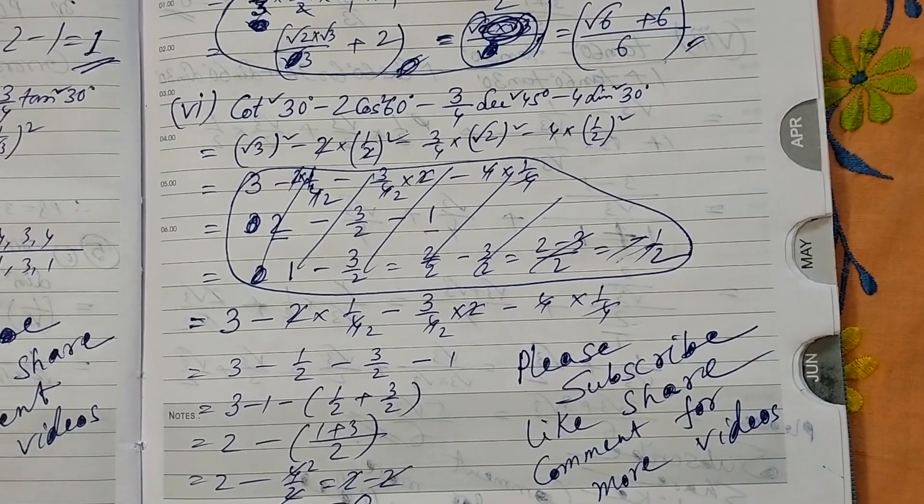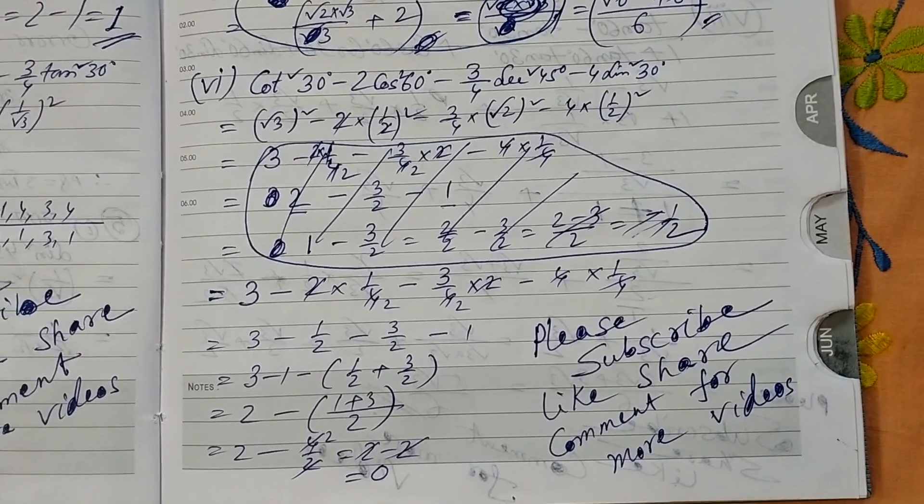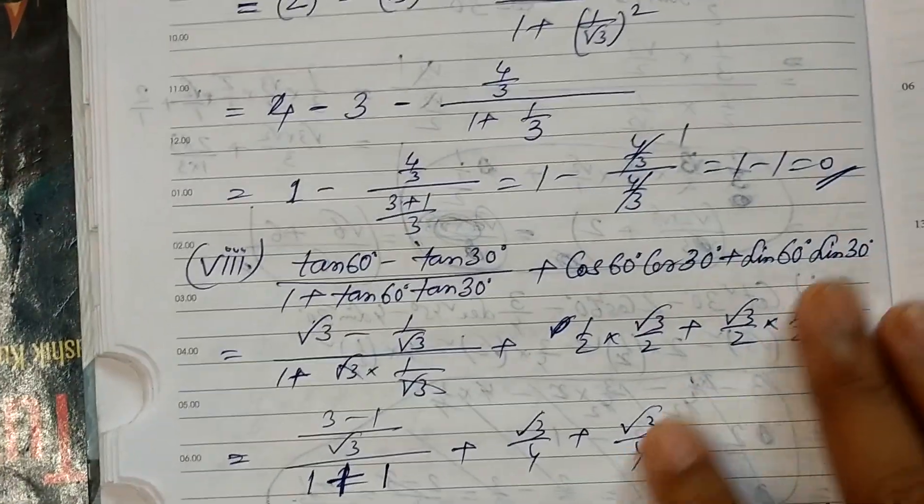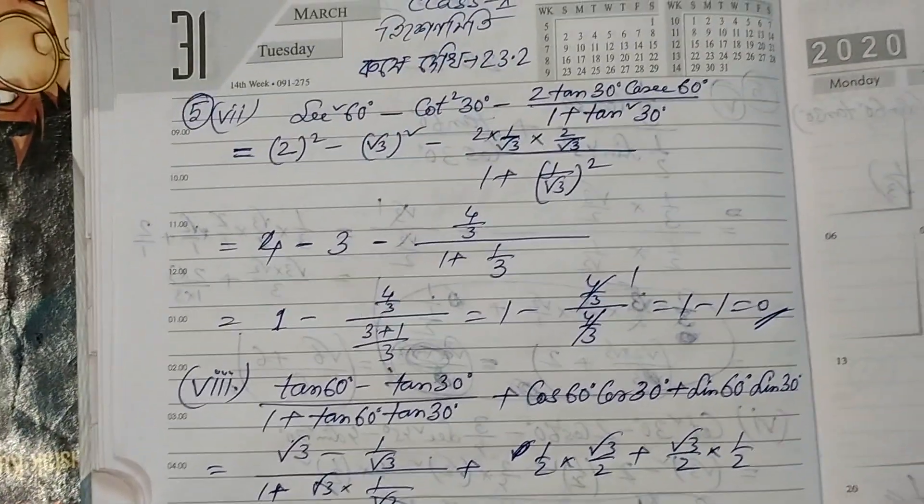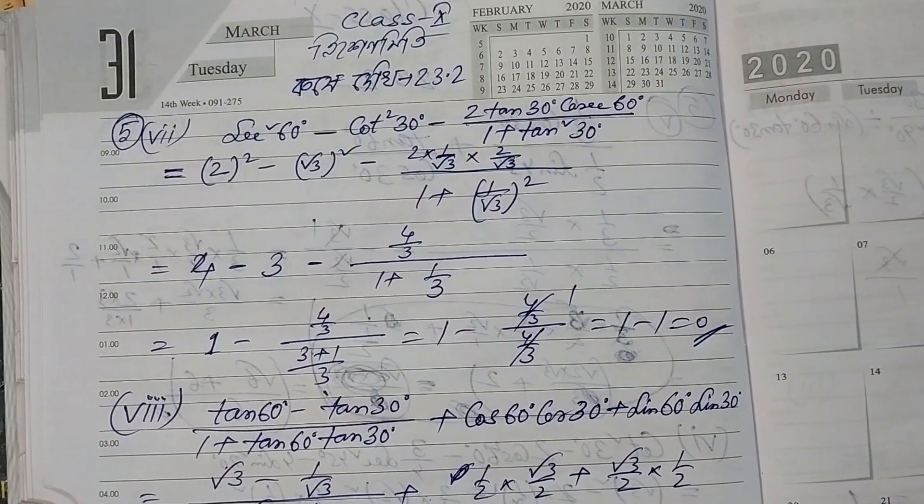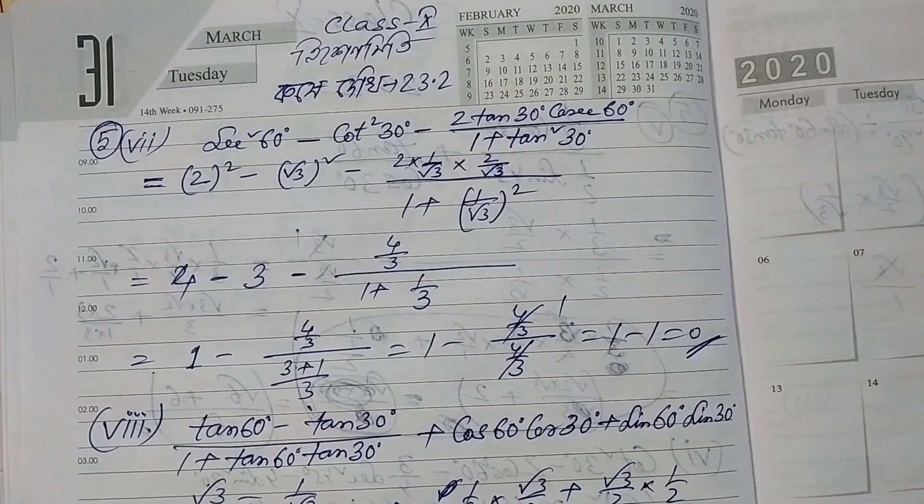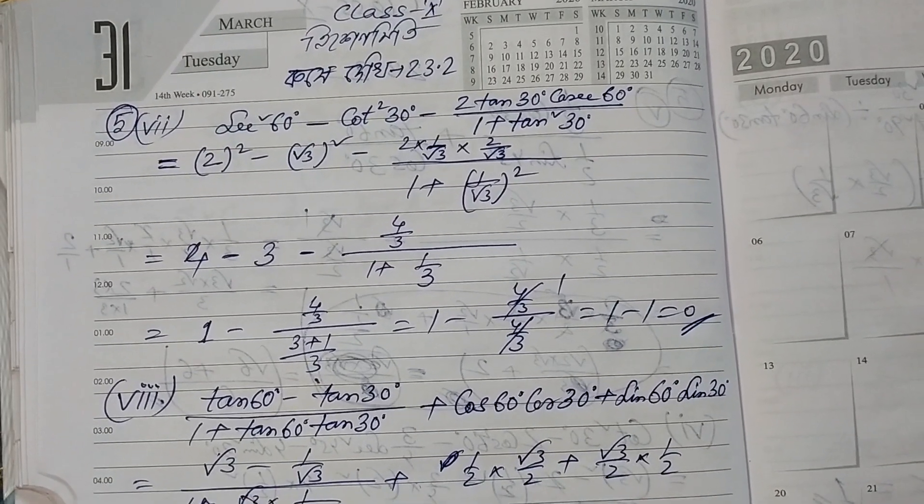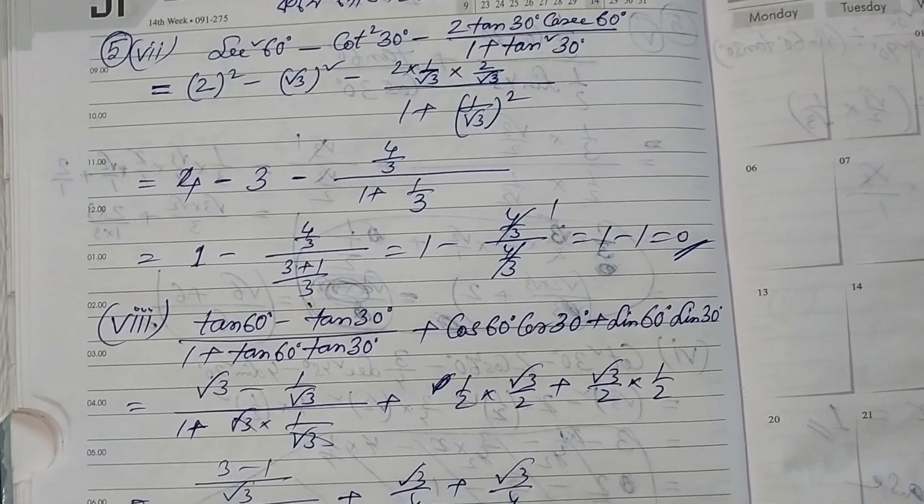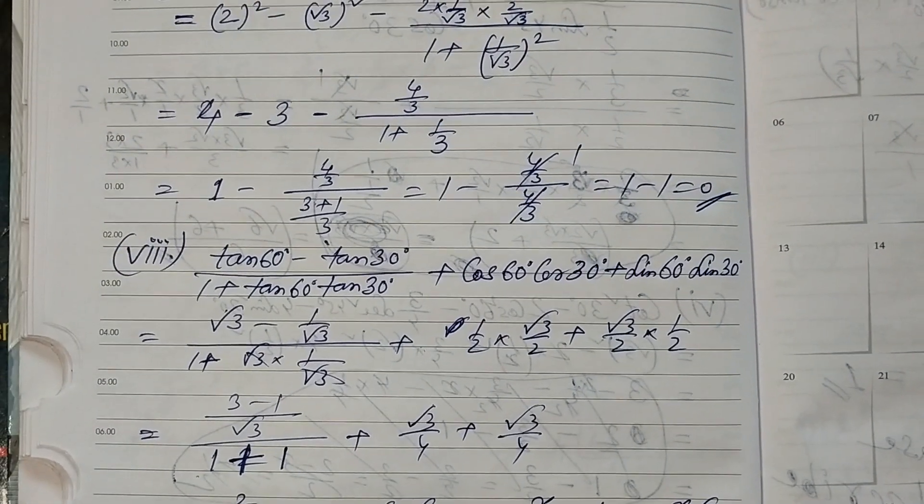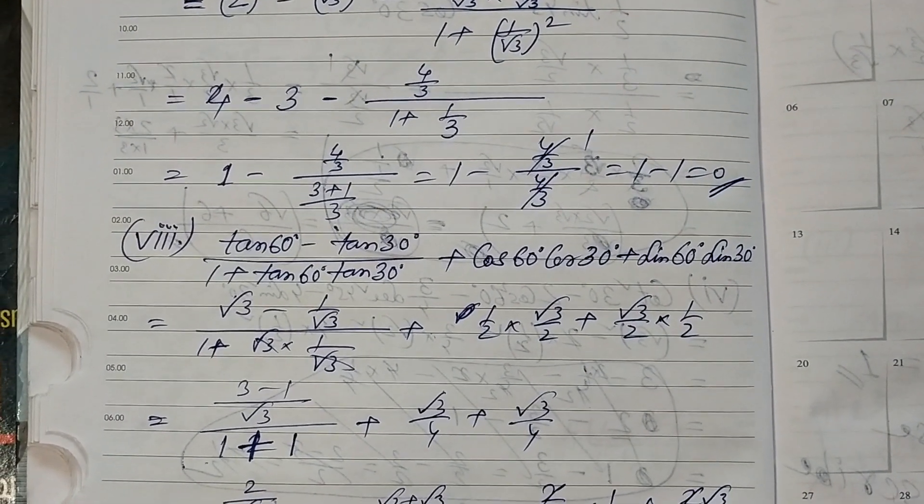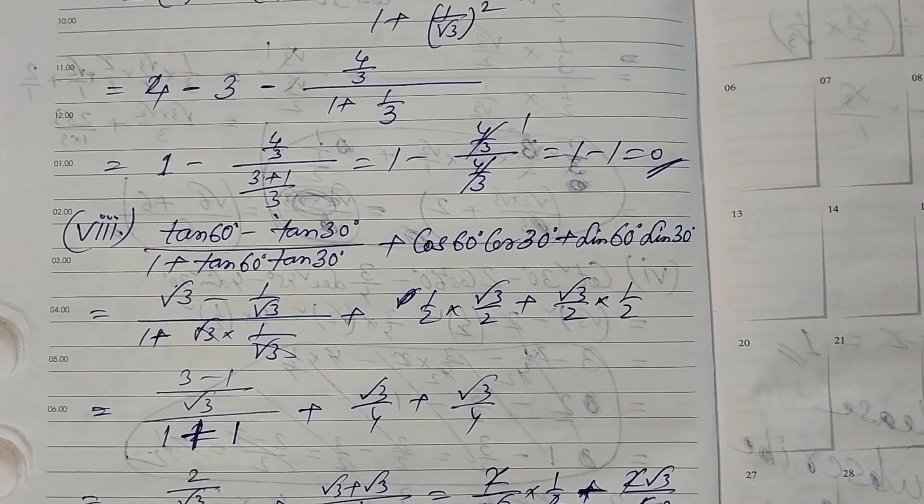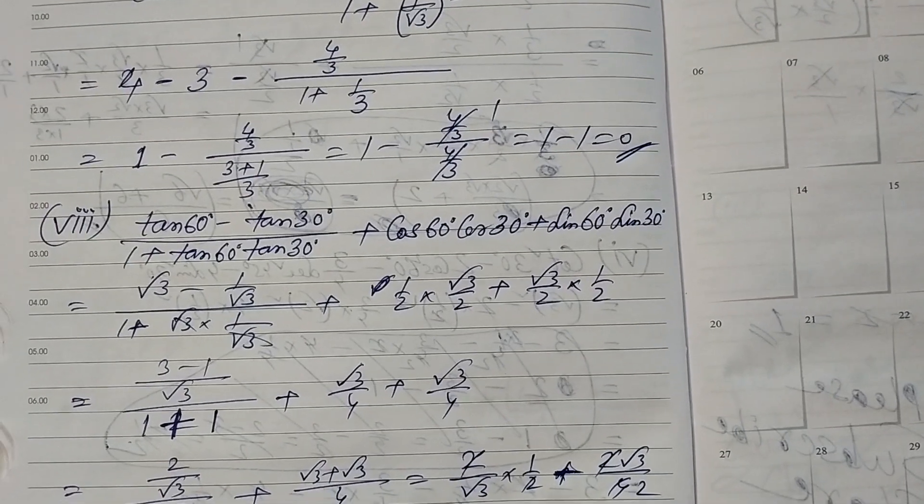Tan 60 degrees minus 2 tan 30 degrees cos 60 degrees by 1 plus tan 30 degrees. Just solve the problem. Tan 60 degrees minus tan 30 degrees by 1 plus tan 60 degrees tan 30 degrees. Cos 60 degrees cos 30 degrees plus sine 60 degrees sine 30 degrees. Just simplification.